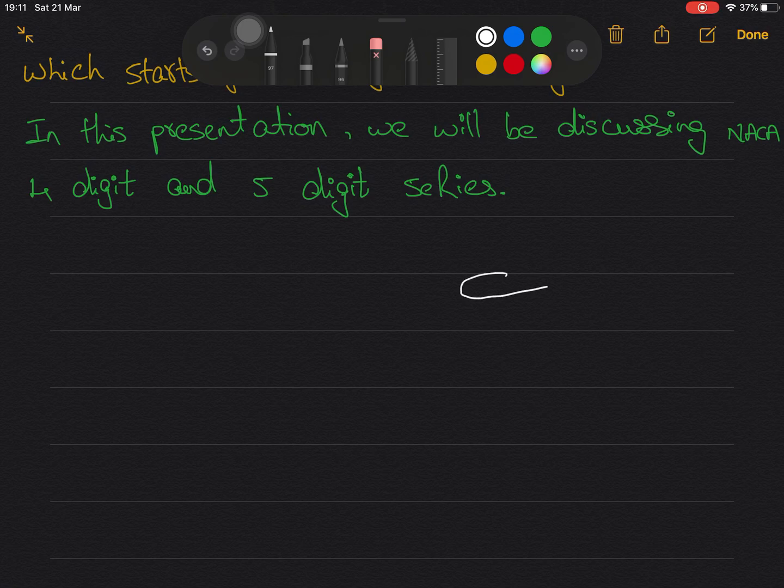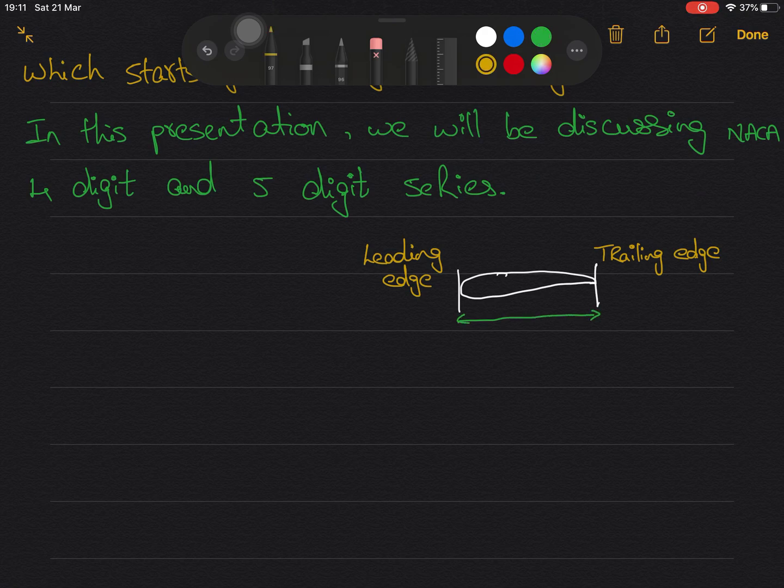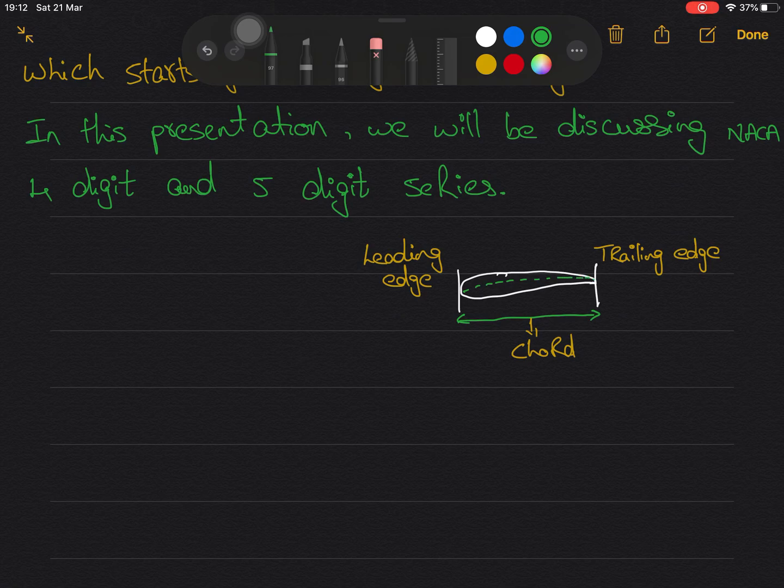Before going into NACA digit series, let's see the basics of airfoil. That is the trailing edge and the leading edge which are forward and aft sections of airfoil. Chord: a straight distance between leading and trailing edge. Camber line: that runs along the curvature of airfoil.